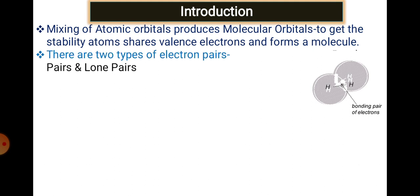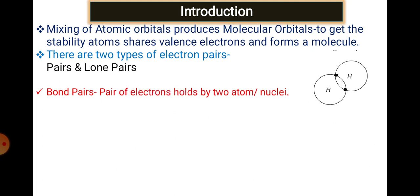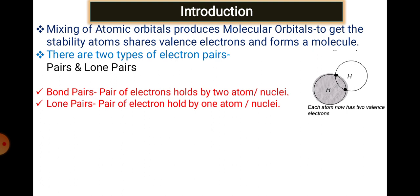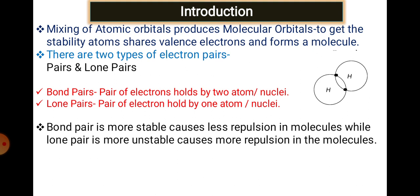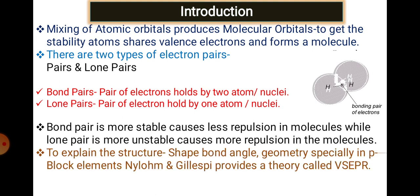In every molecule, particularly in the P-block system, there are two types of electron pairs: lone pairs and bond pairs. A bond pair is a pair of electrons present between two nuclei — held by two atoms. A lone pair is a pair of electrons held by only one nucleus. Bond pairs are stable and cause less repulsion, while lone pairs are unstable, cause more repulsion, and occupy more area in a molecule.